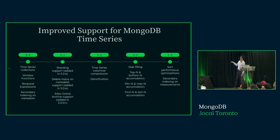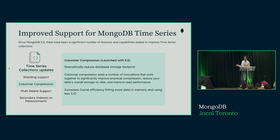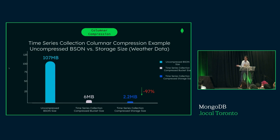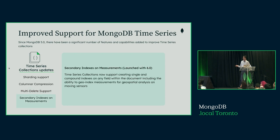On the roadmap: 6.0 is now GA, incorporating all improvements from 5.0 to 6.0 over one year. New query operators include top, bottom, and accumulator operators, plus operators to fill gaps in time series readings. Sharding support was introduced in 5.0.6. Columnar compression gives fantastic results — almost 30 times compression, nearly a 97% reduction in dataset size — and time series data is stored compressed in memory too. Multi-delete support was added later, allowing deletion of multiple meta fields. And measurement indexes were introduced, enabling queries based on specific value ranges for measurements.